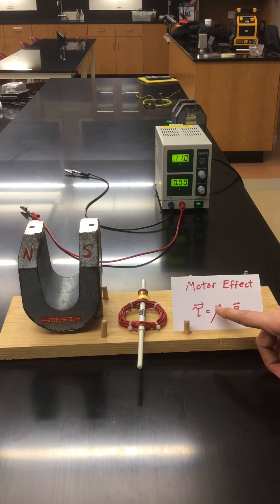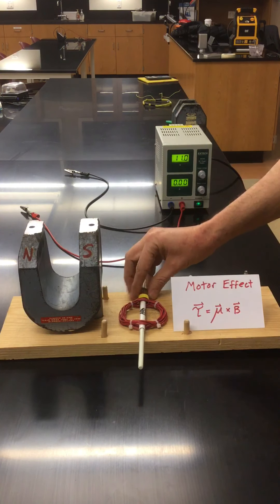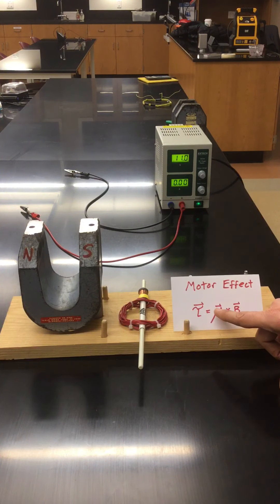Okay, so that's mu and the torque exerted on this is a vector cross product between mu and B.